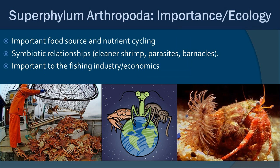Superphylum Arthropoda has huge ecological importance. It is a massive food source: many crustaceans are part of the planktonic community in the ocean, including holoplankton like copepods and amphipods that feed the largest animals on the planet — whales, for example. They are also important in nutrient cycling, with hermit crabs and benthic organisms stirring up deposits as detritivores. They have various symbiotic relationships, including cleaner shrimp that clean other fish. And they are a big part of the fishing industry for humans.